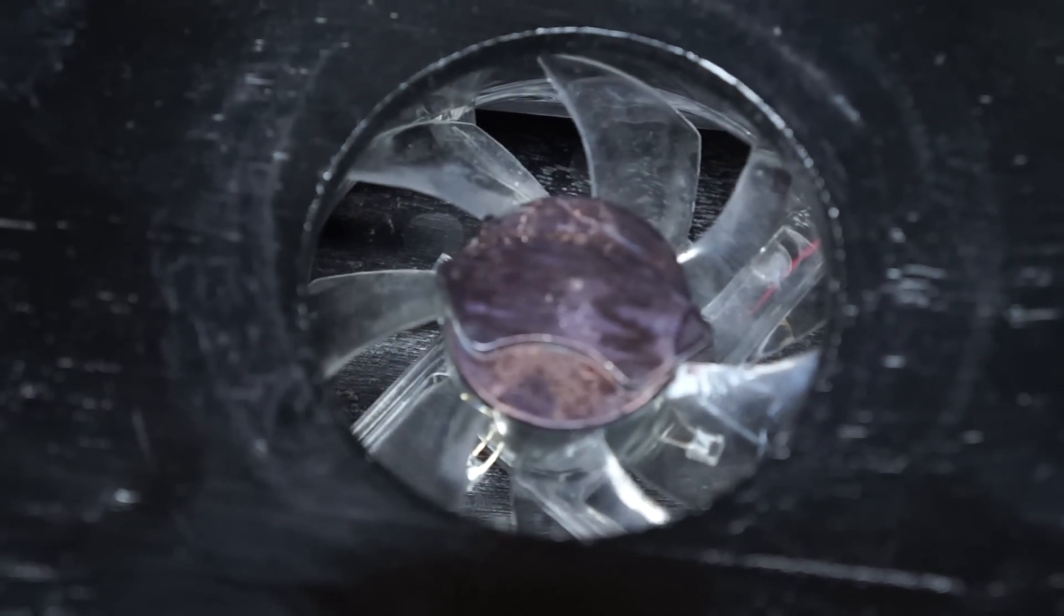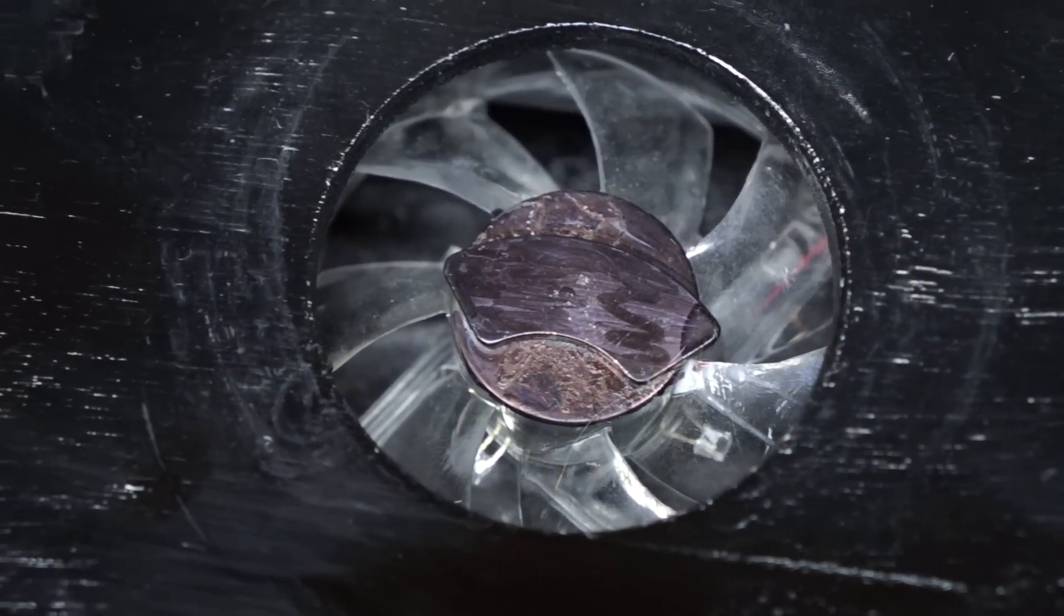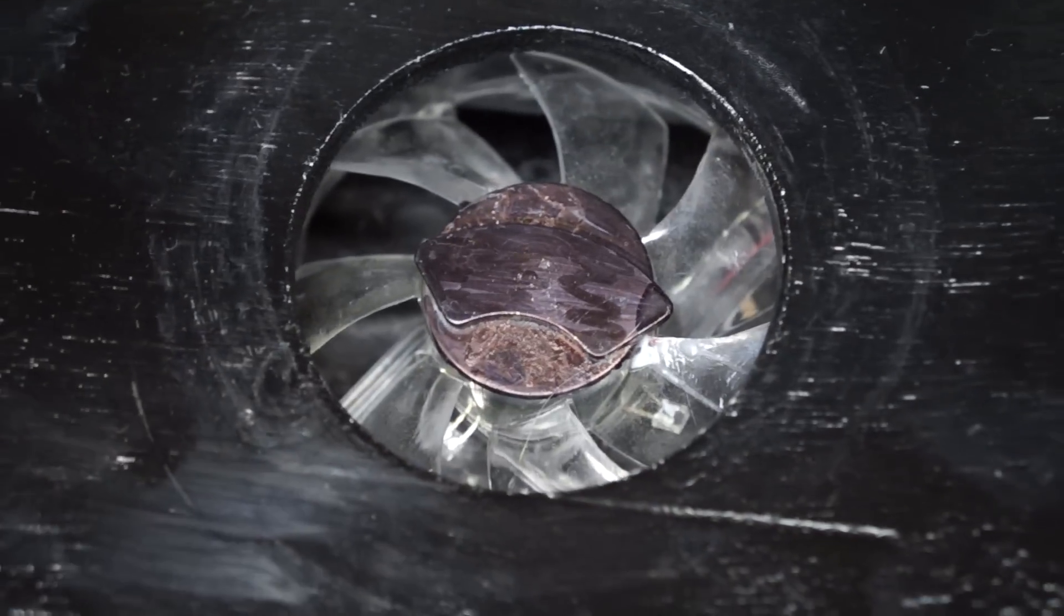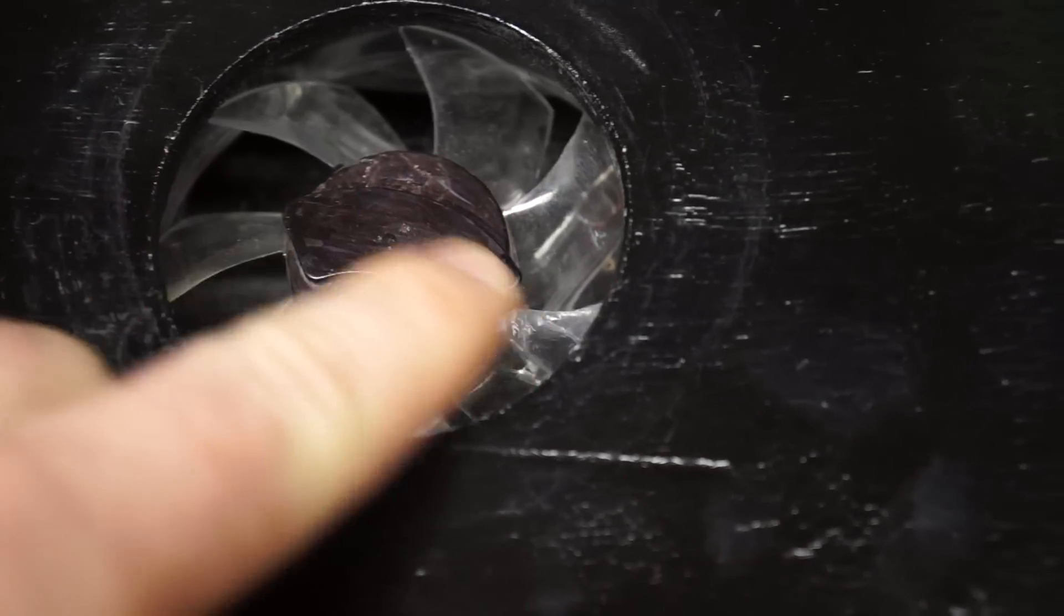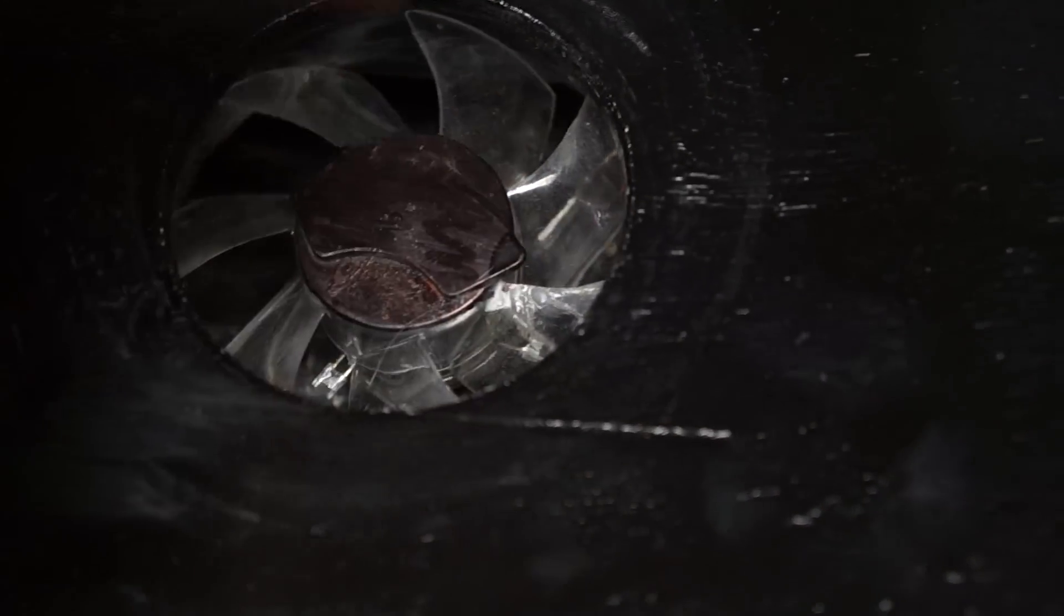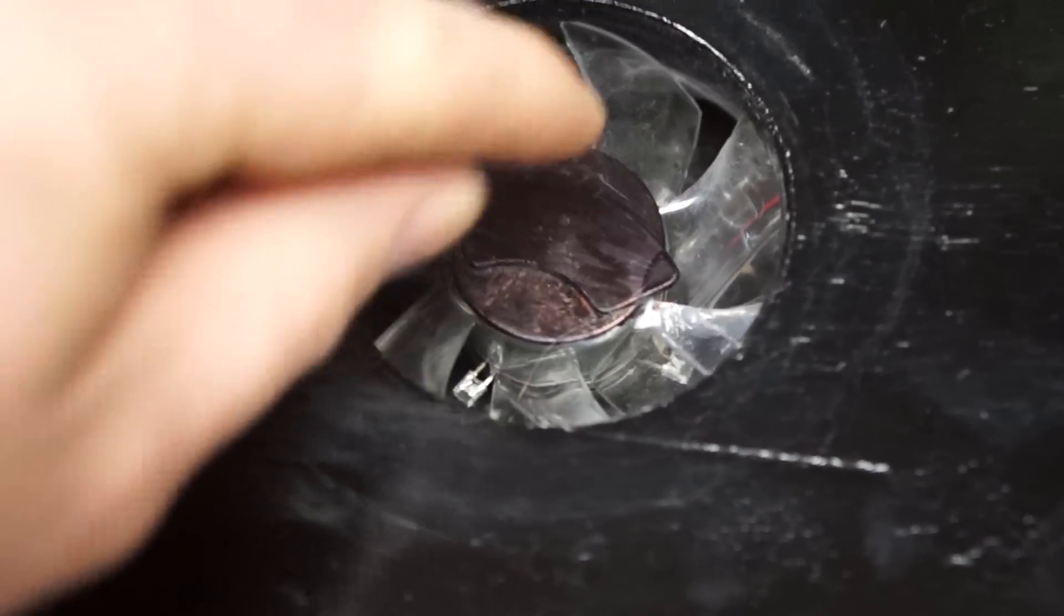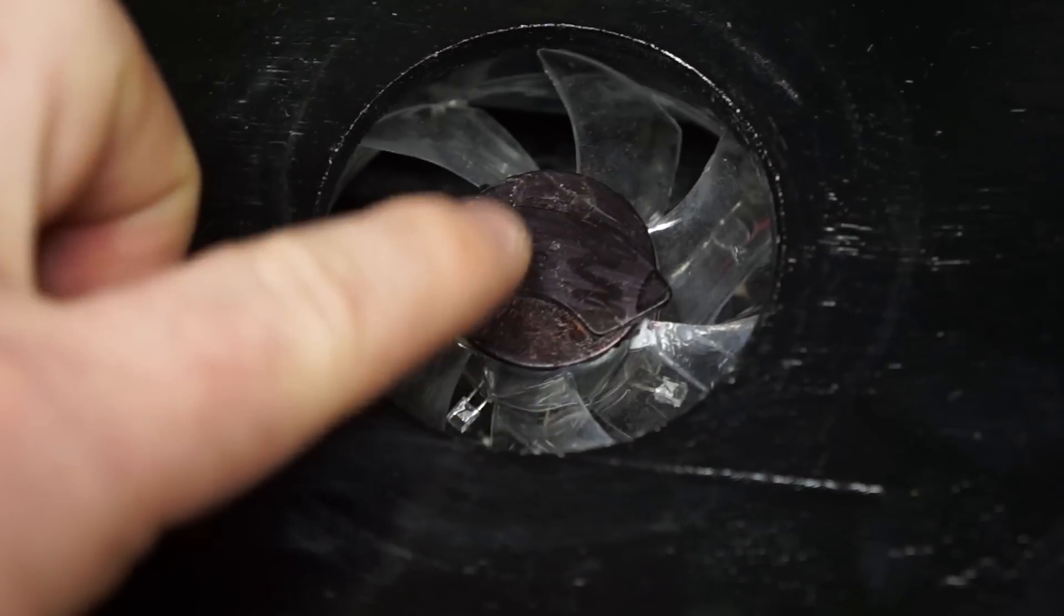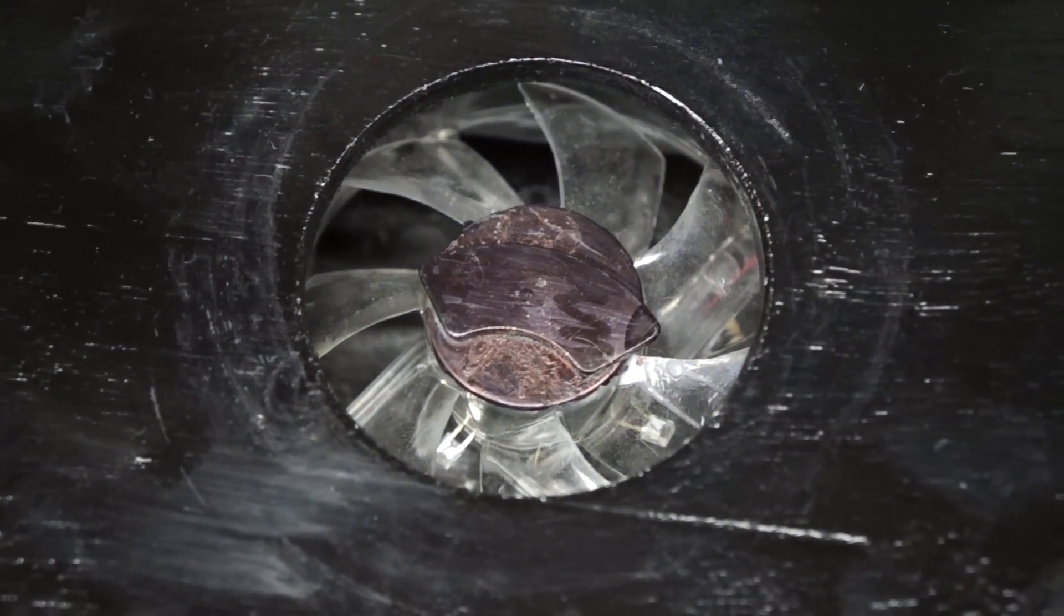You want it to be dead center because you want the balance when this fan starts spinning. What that rare earth magnet does is it grabs that stir bar and it just spins it inside of your Erlenmeyer flask. These are easy to get out of the hard drive—you just have to make sure that you're not being too aggressive with it or they can break. I broke a couple of them.